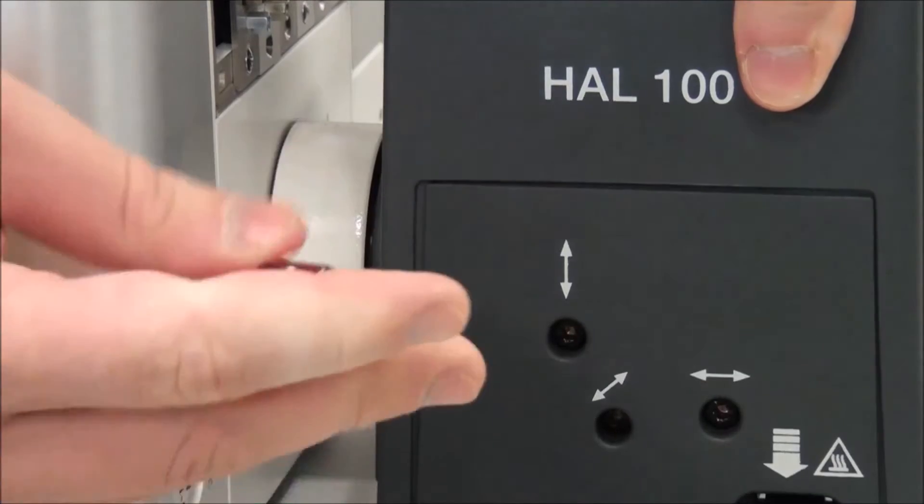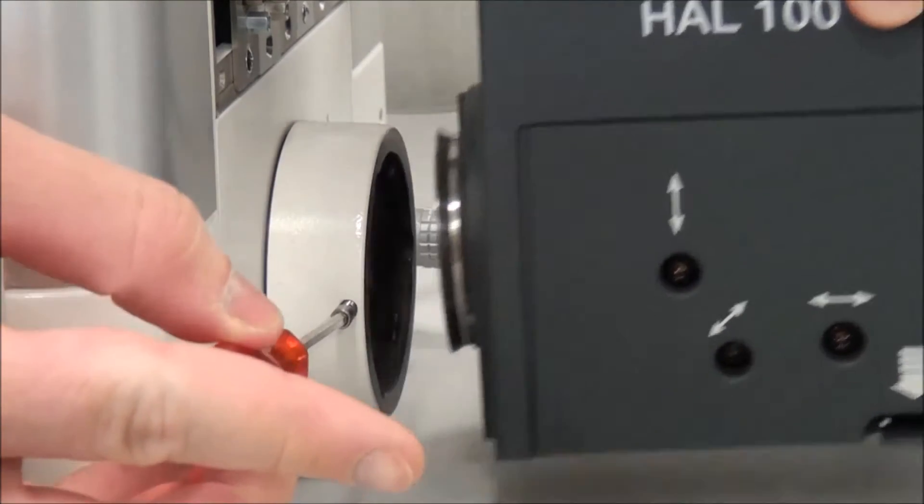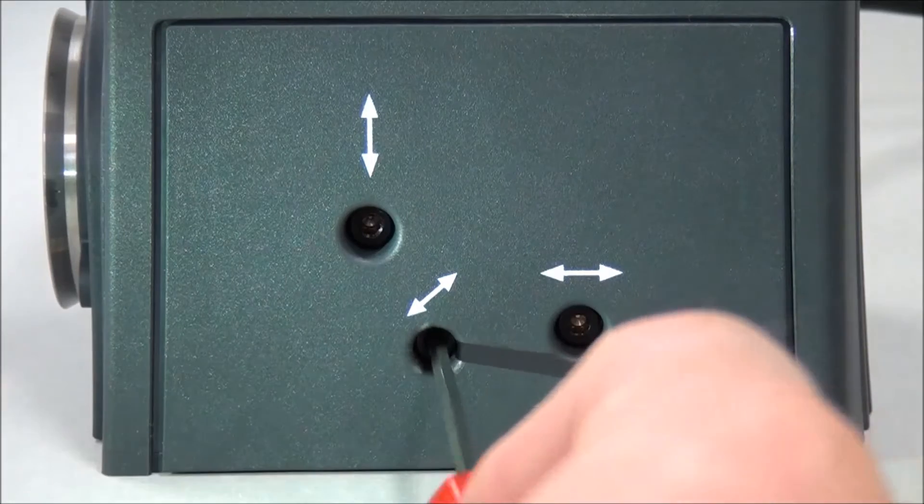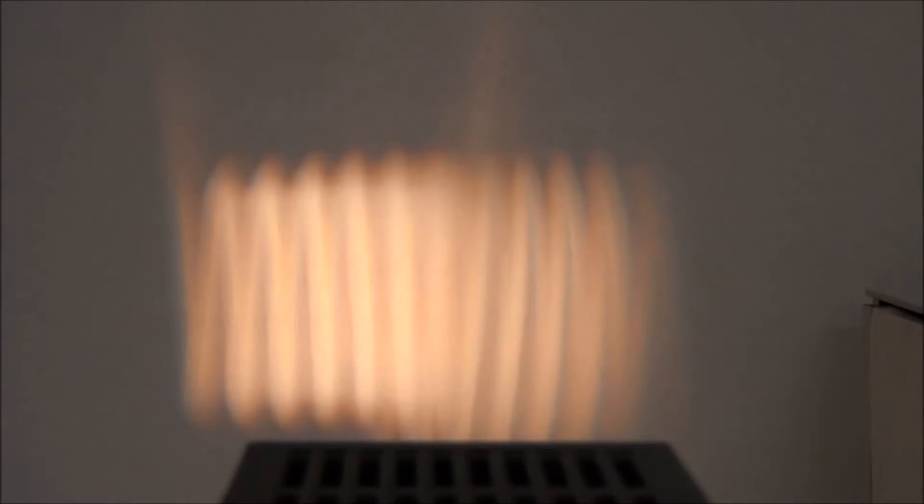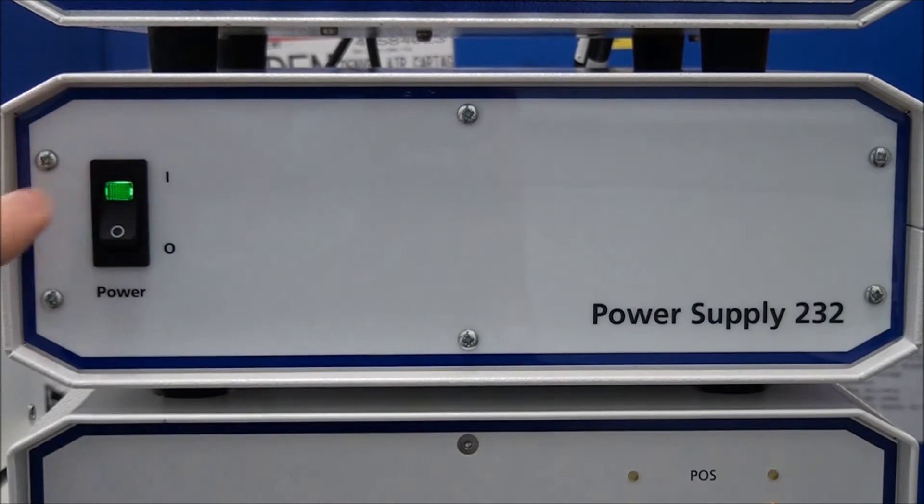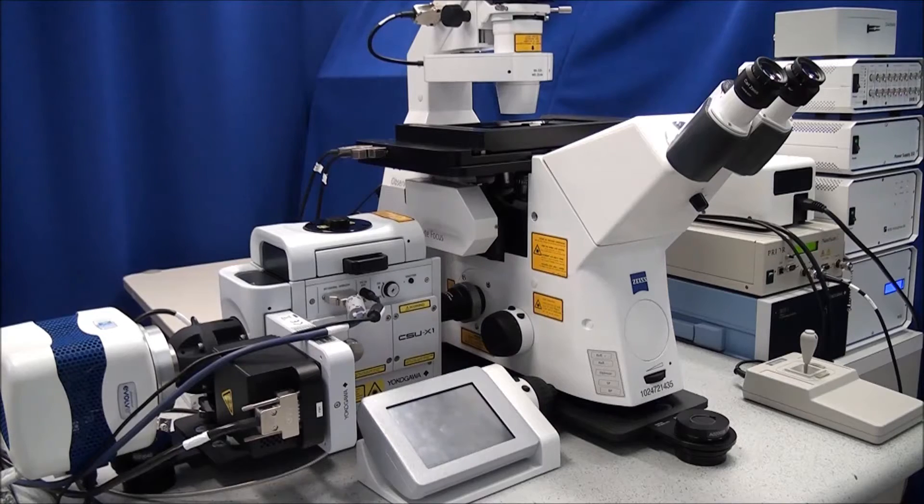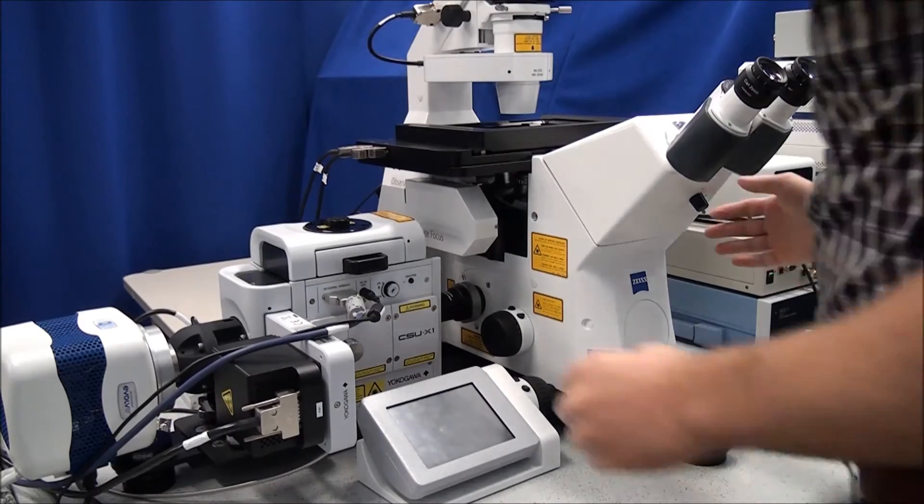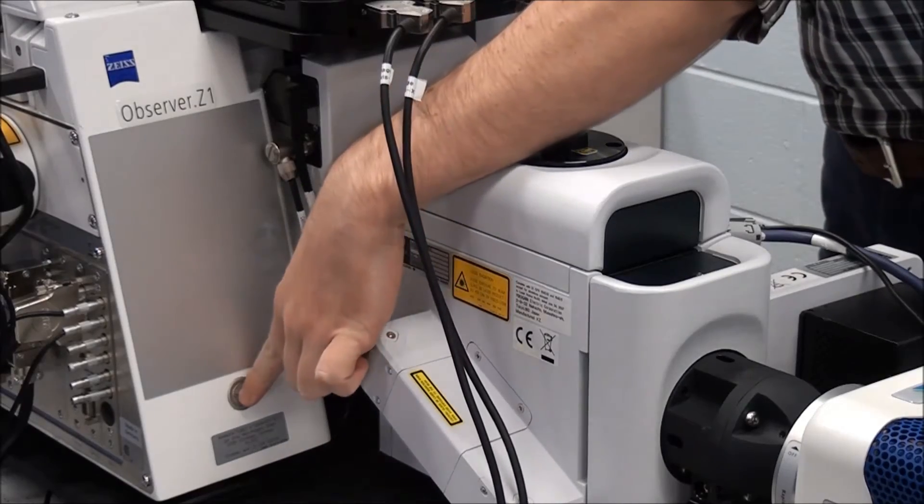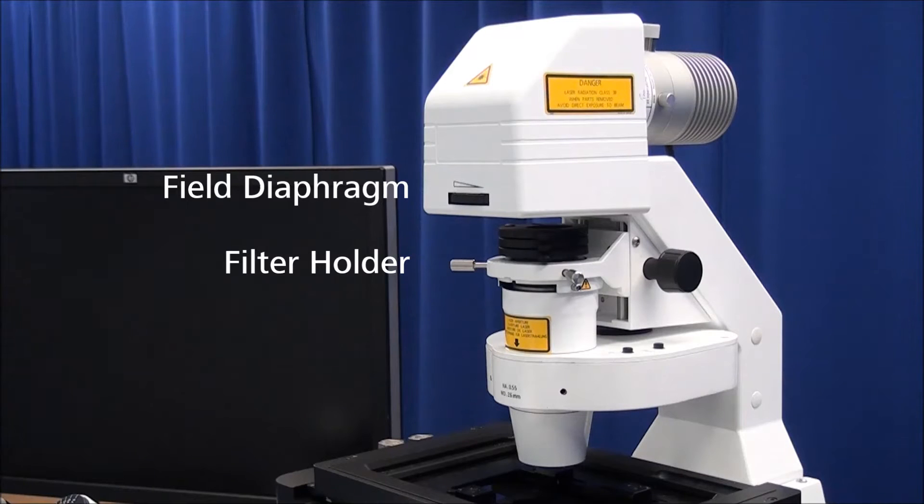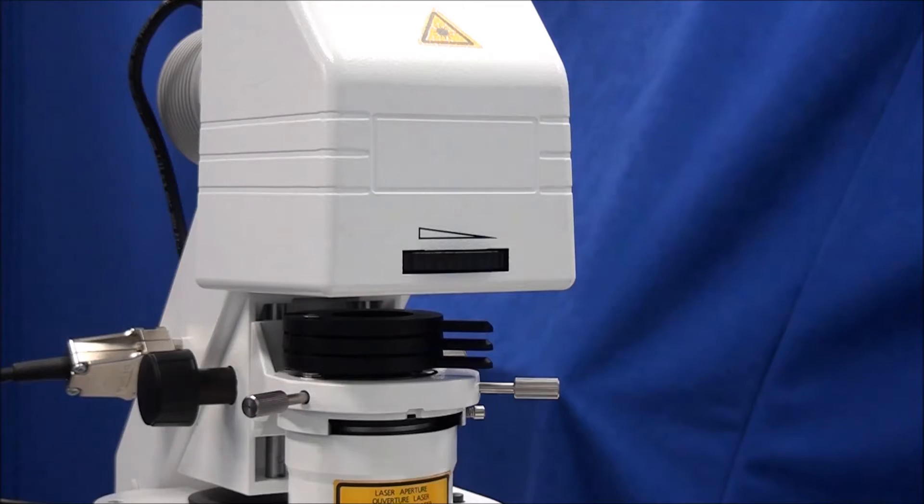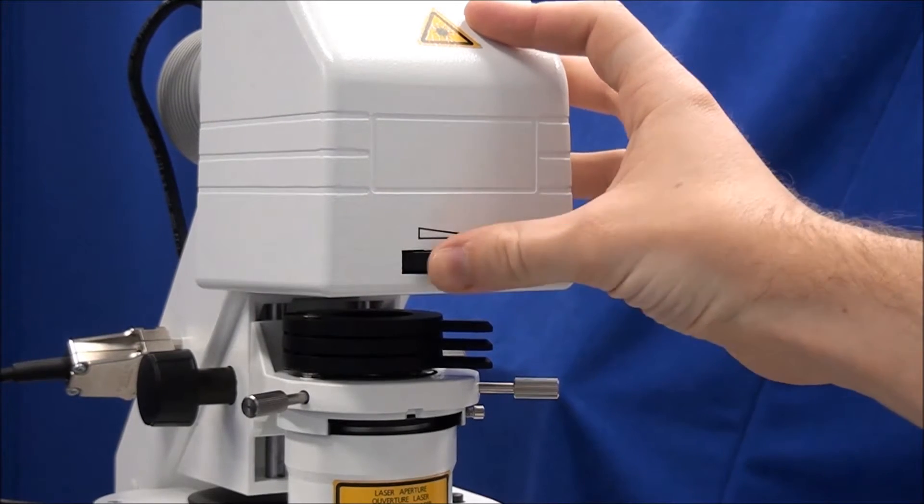If your microscope is equipped with a halogen, or HAL, lamp housing, be sure that you have aligned the HAL bulb before setting up Kohler. This process is covered in the companion video, How to Align and Focus Your HAL Lamp for Kohler Illumination. Switch on the Observer via the power supply box and the power button on the stand. Open the field diaphragm located on the transmitted light arm and swing the lollipop filter changer out of the light path.